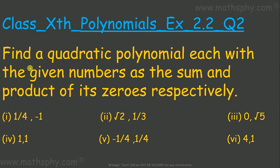This question asks us to find a quadratic polynomial with given numbers as the sum and product of its zeroes respectively. We have the sum and product of zeroes for the quadratic polynomial listed. In all six different questions, we have to find the algebraic expression of the quadratic polynomial whose sum and product of zeroes are as given.